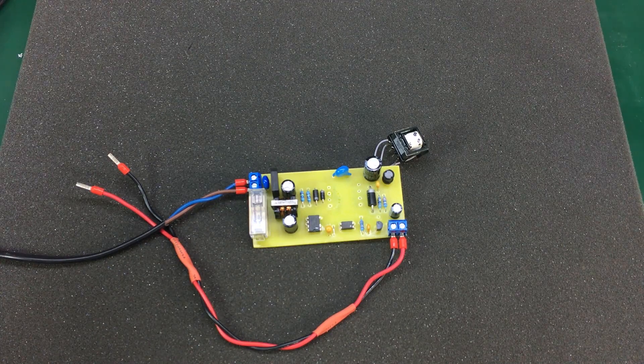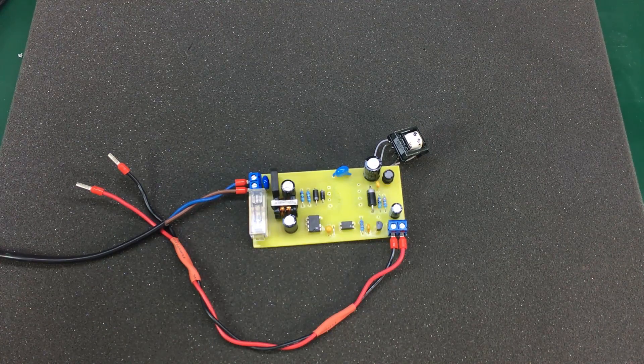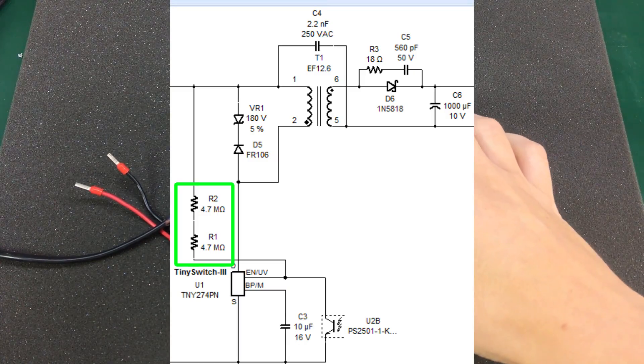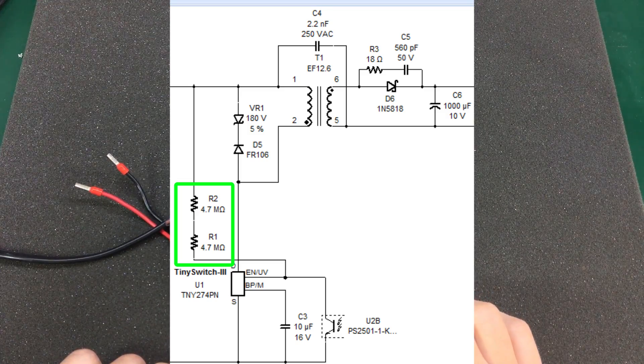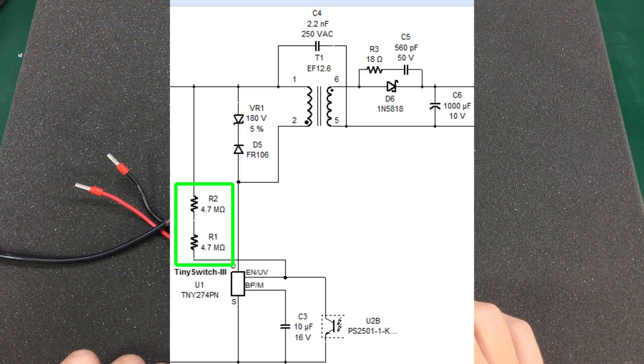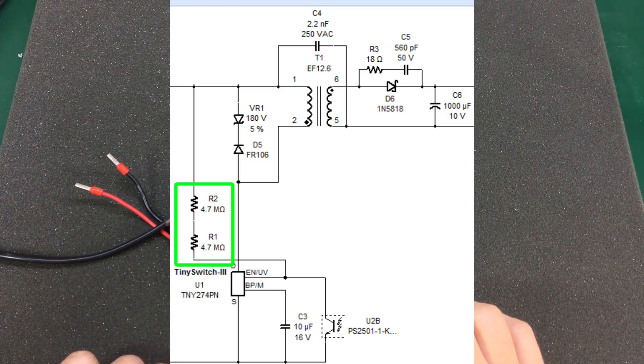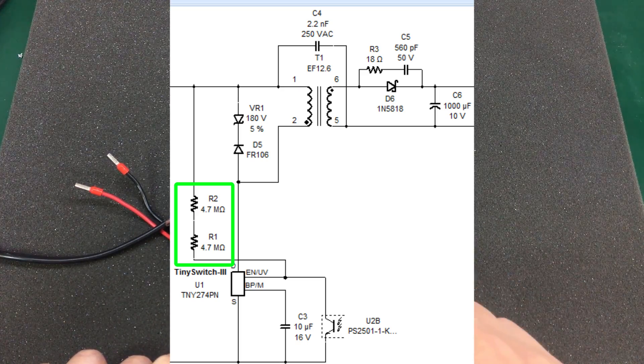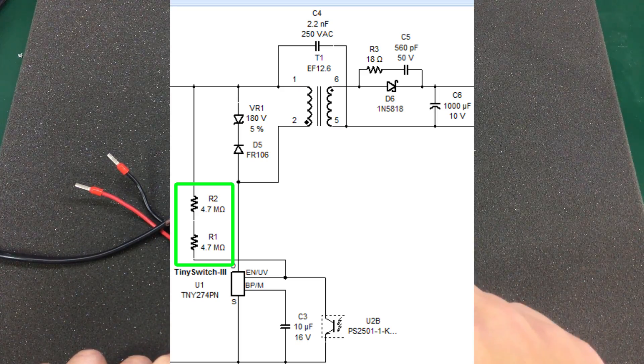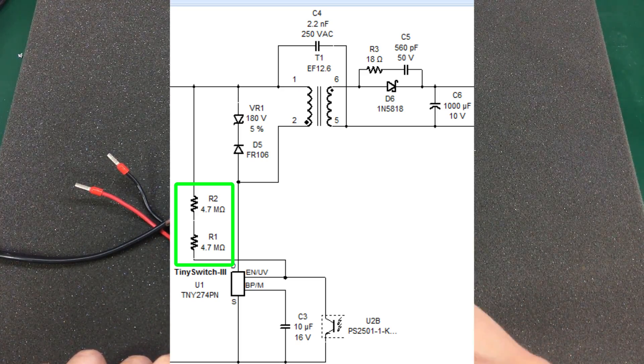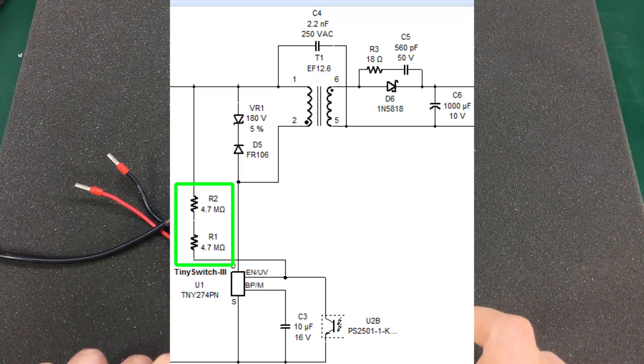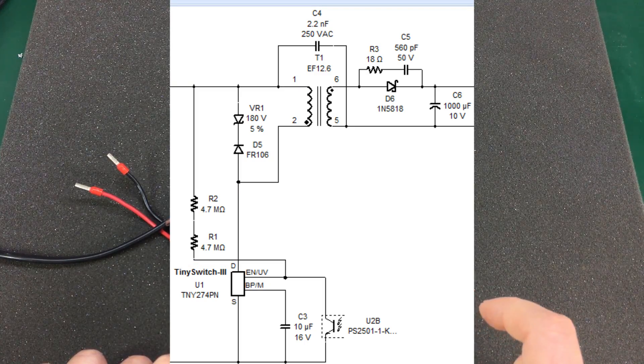So I moved on to the next idea and changed these two biasing resistors from 2M to 4.7M because I noticed the values of these resistors vary according to the actual device selected in the design software, and I think they also vary with the desired input voltage range. But that didn't help either.